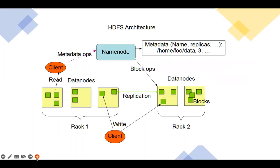This is the general architecture showing Name Nodes and Data Nodes on separate machines with the Name Node on the master machine. As shown in the diagram, there is a concept here called replication — those small green blocks represent replication, which means each block has copies distributed across different Data Nodes.